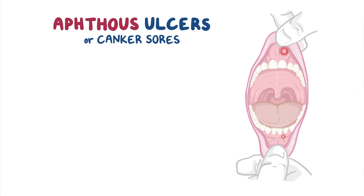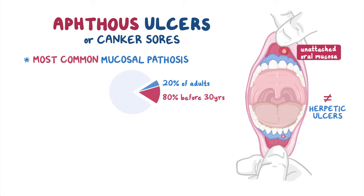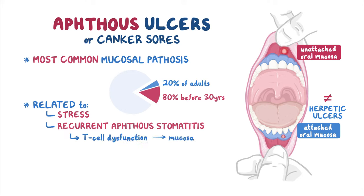Aphthous ulcers, or canker sores, are the most common mucosal pathosis, found in 20% of adults, with about 80% experiencing these ulcers before age 30. Aphthous ulcers only occur on the unattached oral mucosa, unlike herpetic ulcers or cold sores, which occur on the attached oral mucosa. Most aphthous ulcers are related to stress, as often reported by patients. Yet some individuals will suffer recurrences, termed recurrent aphthous stomatitis. Researchers believe it may be caused by T-cell dysfunction, leading to mucosal breakdown or the presence of microorganisms.